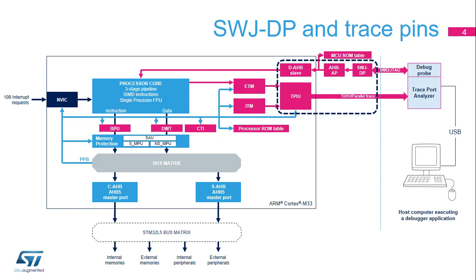The SWJDP supports two protocols to exchange data with the debug probe: either the two-wire serial wire debug, or SWD, protocol or the five-wire JTAG protocol. The SWJDP automatically detects which protocol is used.